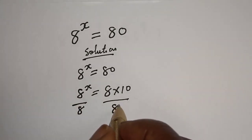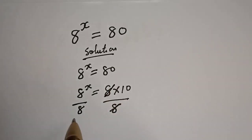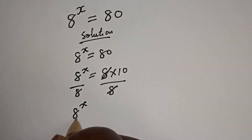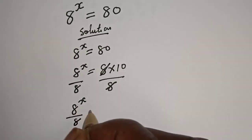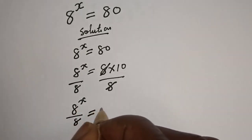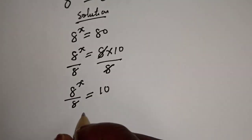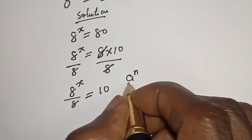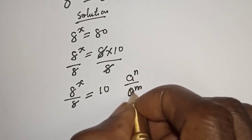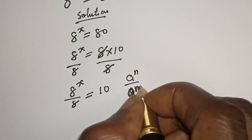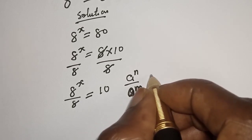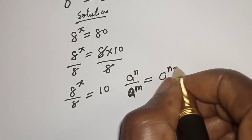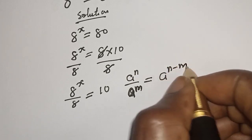Dividing both sides by 8, this cancels here. So 8 raised to power s over 8 is equal to 10. Take note that if you have a raised to power n over a raised to power m, this is equal to a raised to power n minus m.